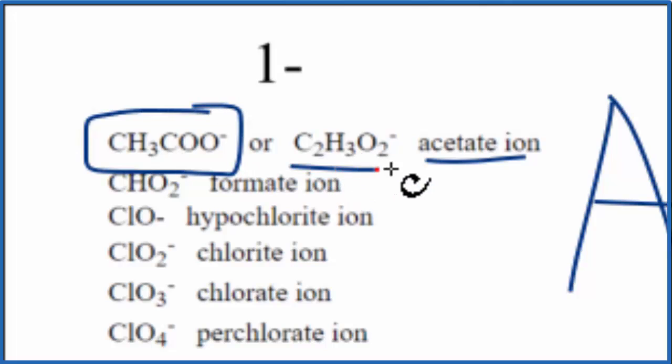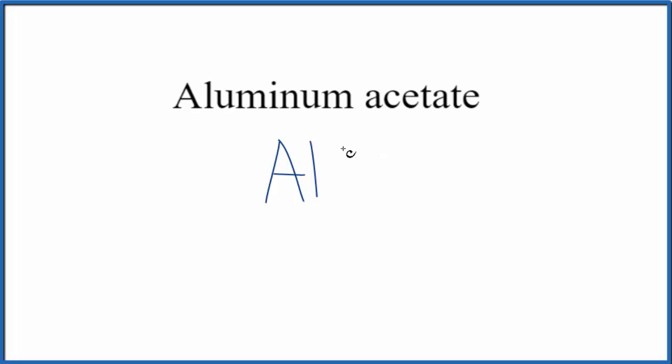Sometimes you'll see it written this way. That's okay as well. It's the same thing. So acetate ion, CH3COO-. So we write the acetate ion, and note that it has that negative charge, that 1- charge.